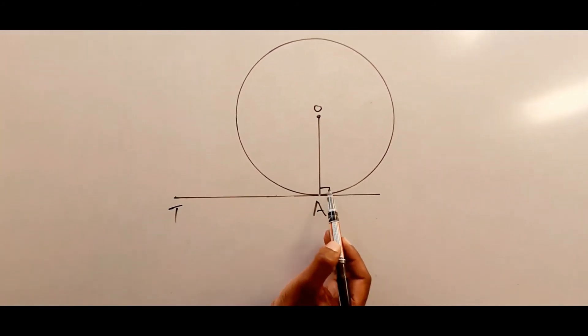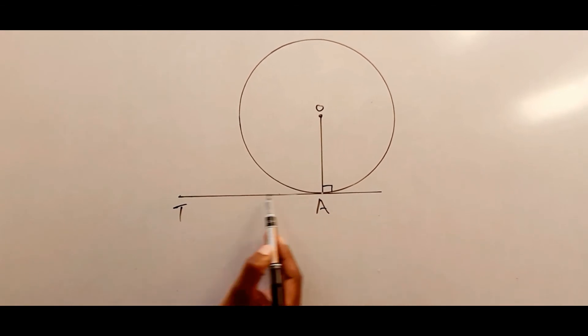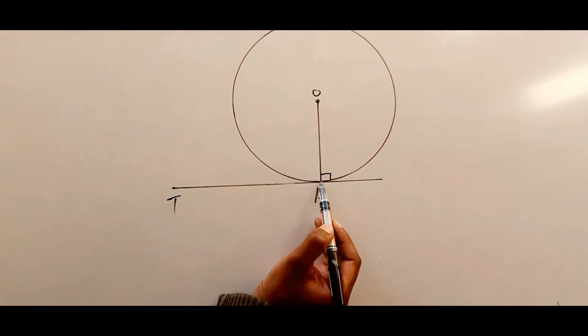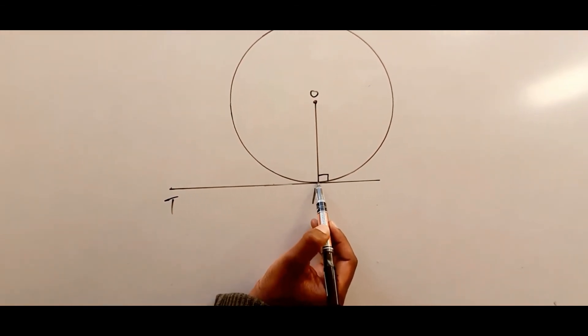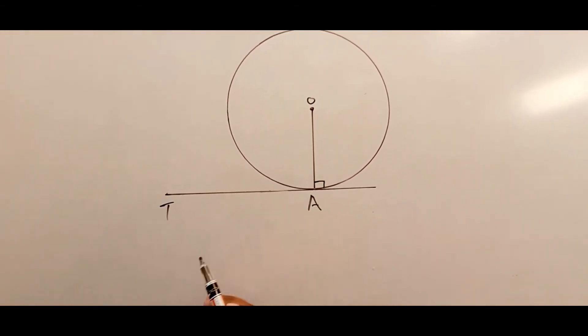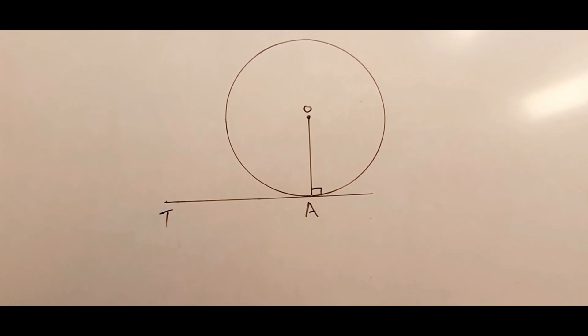The radius will meet the tangent at the very same point on the circumference, and they will make a 90 degree angle.